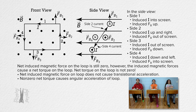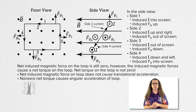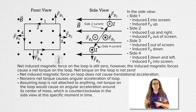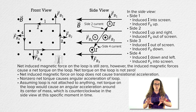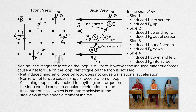That's pretty cool. In this example, assuming the loop is not attached to anything, the net torque on the loop would cause an angular acceleration around its center of mass, which is counterclockwise in the side view perspective at this specific moment in time. We are ignoring the force of gravity acting on the loop for now.